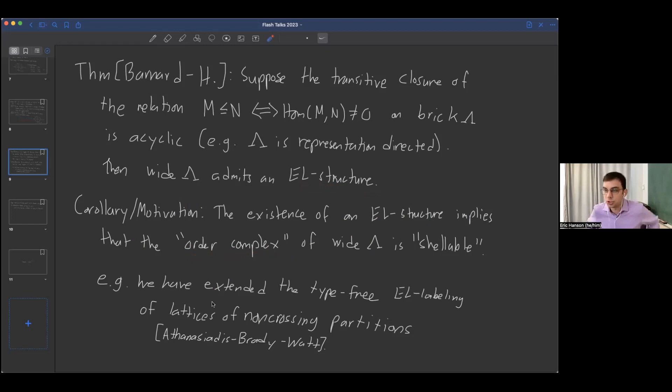Our corollary and motivation is that when an EL structure exists, it implies that the order complex, a simplicial complex formed by the chains of our poset, is a shellable simplicial complex. In particular, it has the homotopy type of a wedge sum of spheres. For example, by looking at hereditary algebras, this actually extends what's known as a type-free EL labeling of the lattices of non-crossing partitions, which was first proved by Athanasiadis, Brady, and Watt. So it's related to some deep combinatorics.